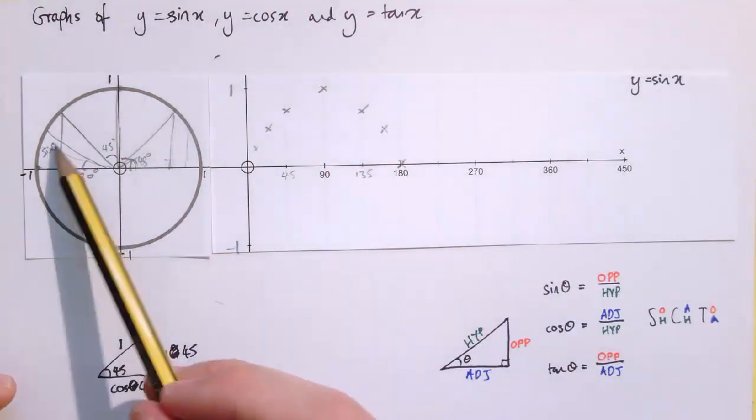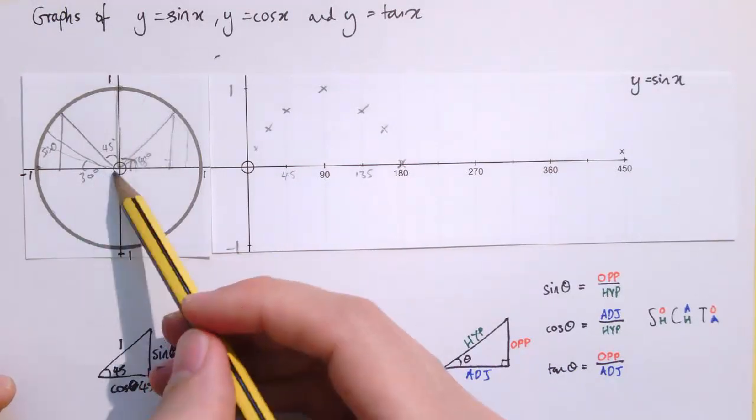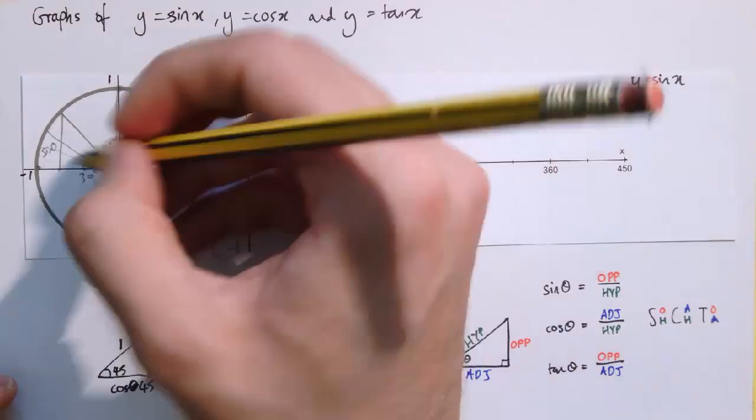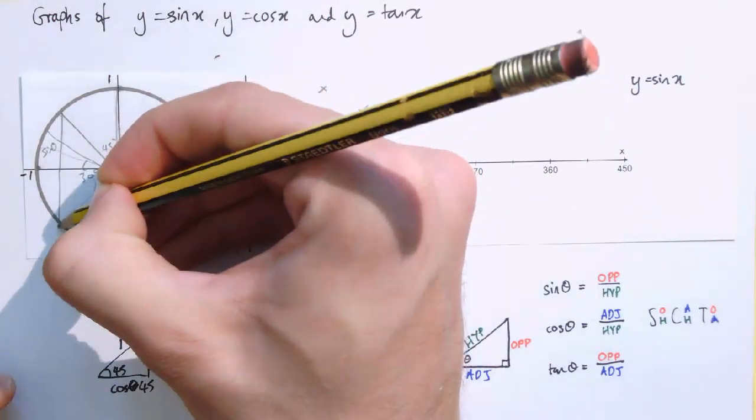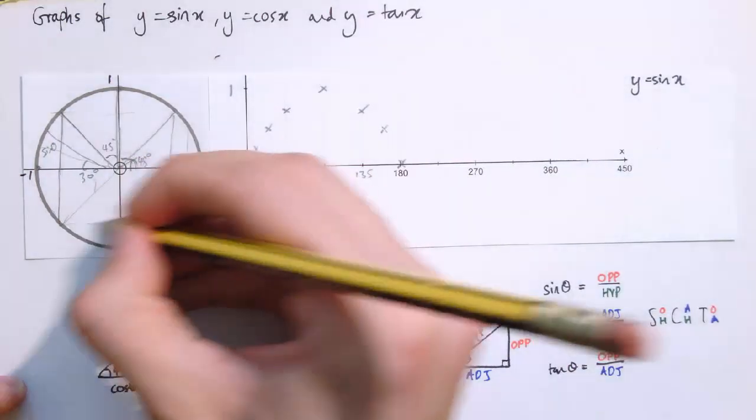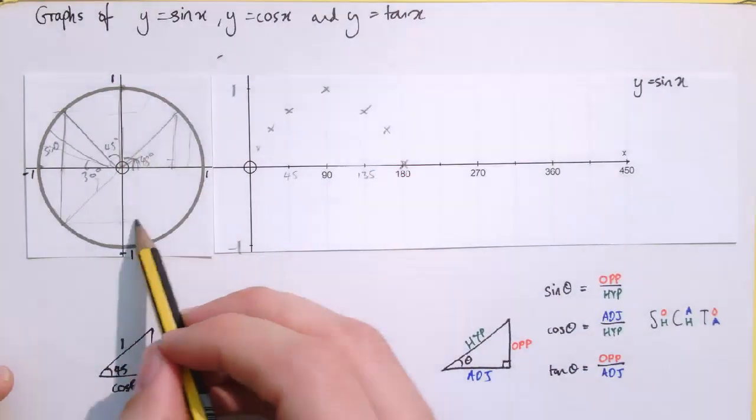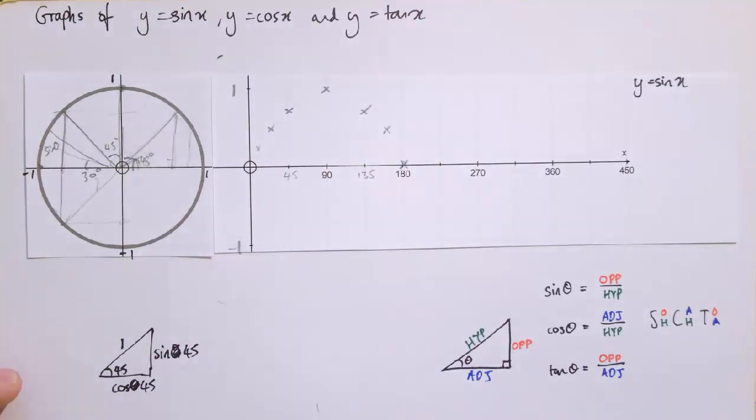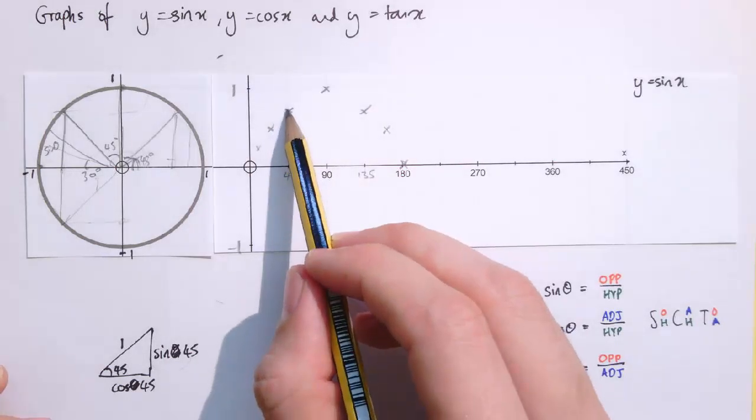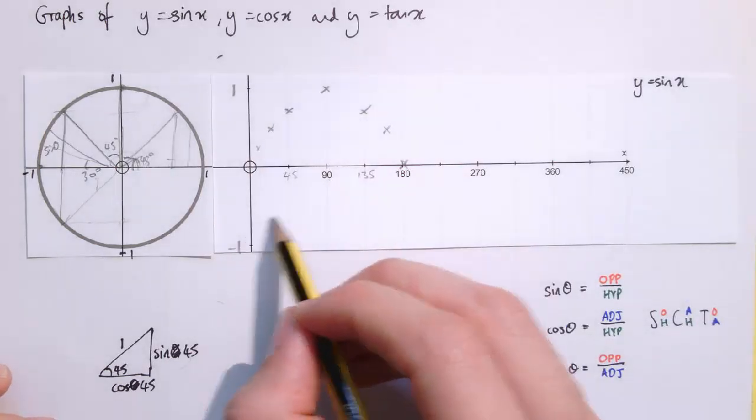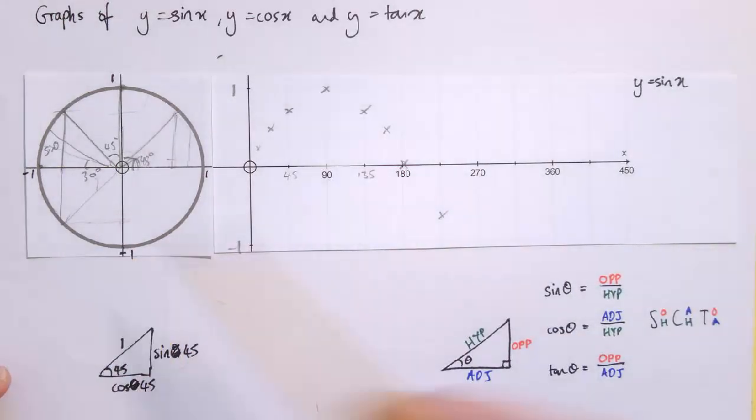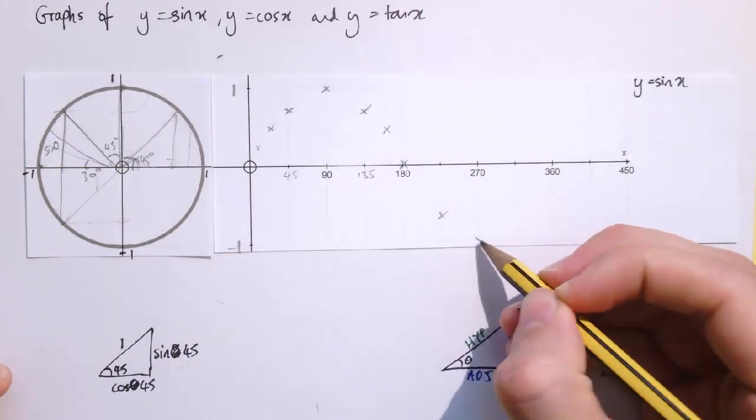And we can actually keep going as far as we like. So I could go around to 225 degrees down here, 180 plus 45. And the difference here is actually it's going to be the same, it's going to be a congruent triangle to this one. But actually rather than being positive up here, the y-coordinate is going to be negative. So that height there, if I were to read it, just read it across here, it would have the same size but negative instead. So that will be somewhere down here.